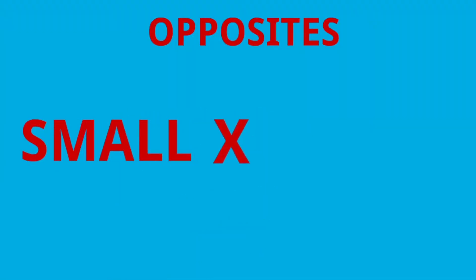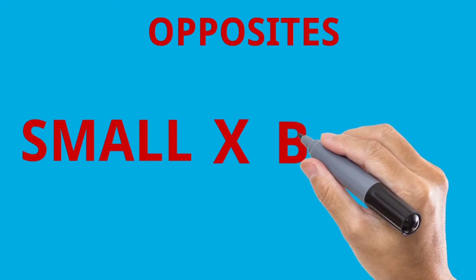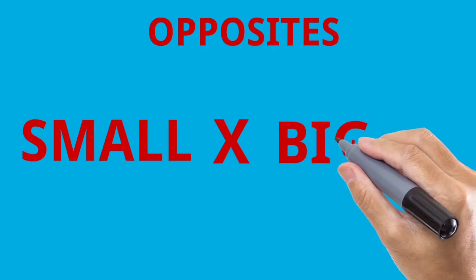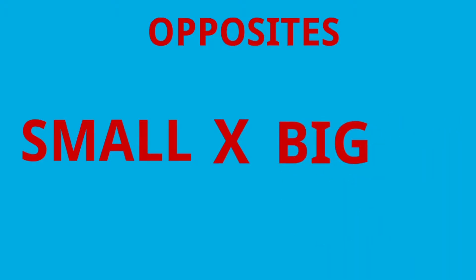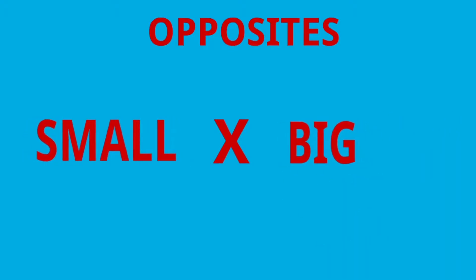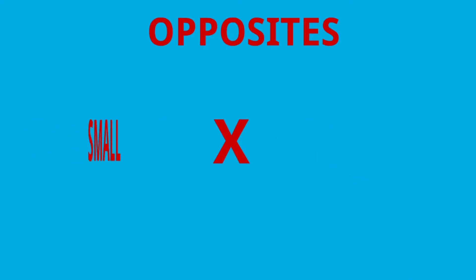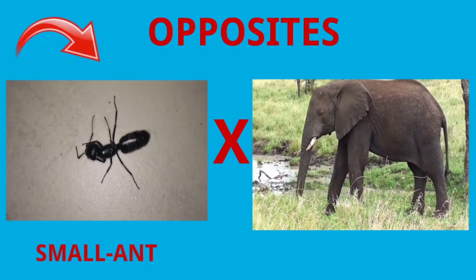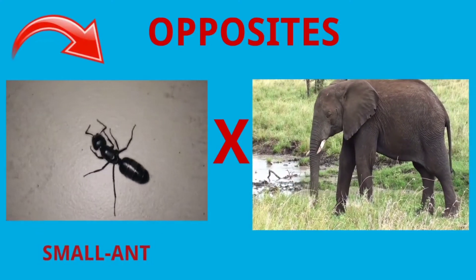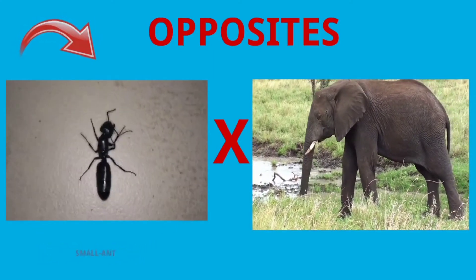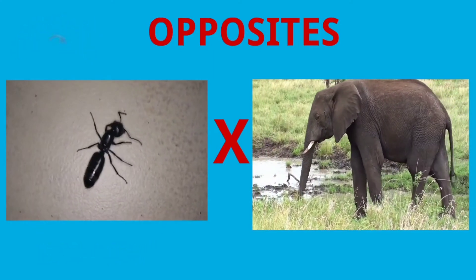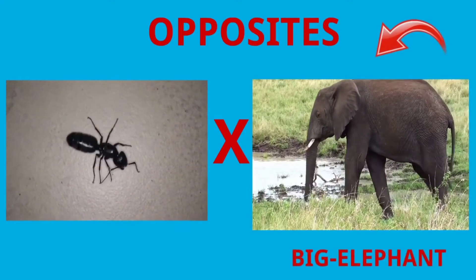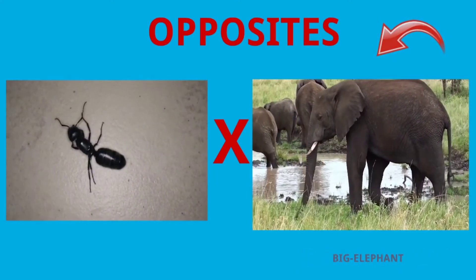Small. Big. Ant is small. Elephant is big.